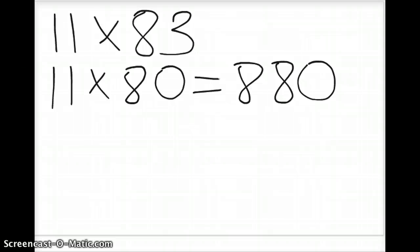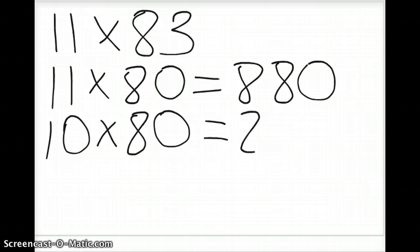You also could have taken, if I still had the same problem, 11 times 83, if I took 11 to 10 times and I took the 83 to 80. So I take this one, 1 times 8 is 8. I've got two zeros in my question, so that would be 800.